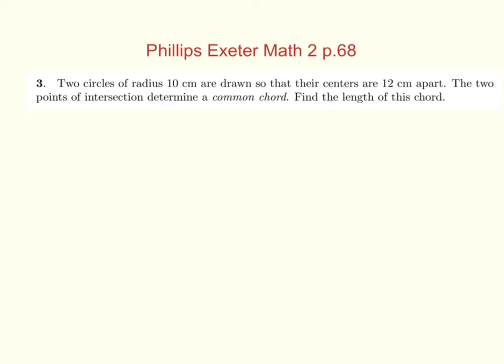This one here. So this is number three on page 68. You have two circles of radius 10 centimeters drawn so their centers are 12 centimeters apart. The two points of intersection determine a common chord. Find the length of this chord.